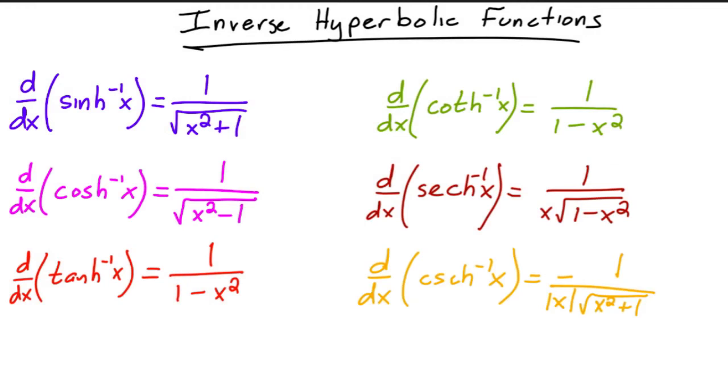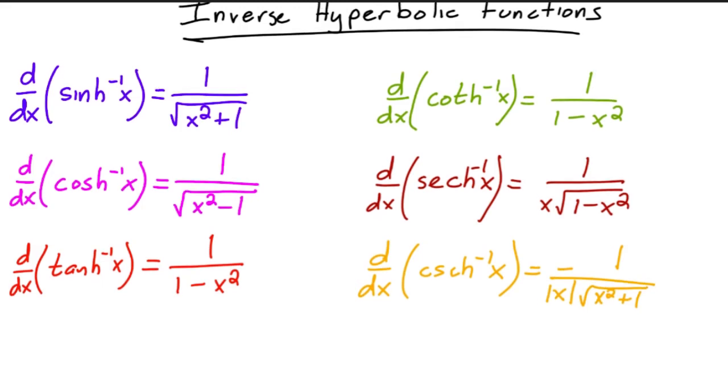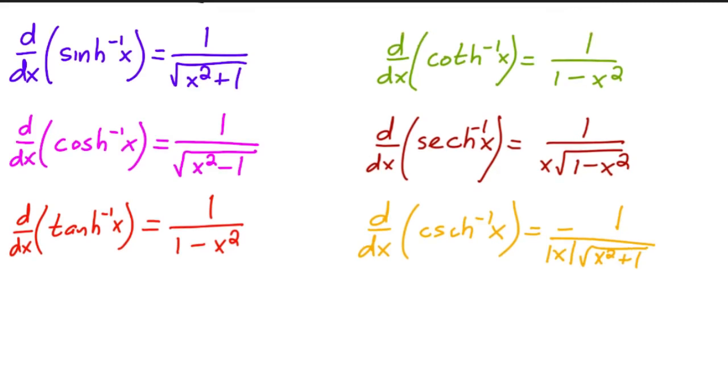And then similar to how you derive the inverse trig functions, you have also the inverse hyperbolic functions. You have the following formulas, so let's do just one quick example. Let's say you want to find the derivative of a function like tanh inverse of 4x squared minus 7.